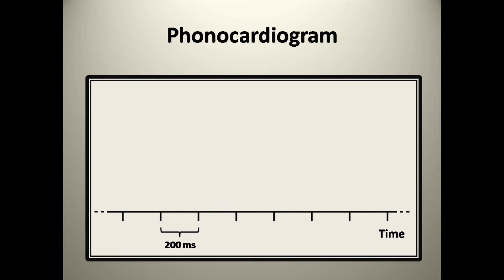When I listen to this murmur, the murmur itself is actually the first thing that stands out to me instead of the heart sounds, so let's start with that. Listen to see whether the murmur is present for longer than 50% of the cardiac cycle, in which case it's likely to be diastolic, or if it lasts shorter than 50% of the cardiac cycle, in which case it's probably systolic. One way to do this is to place your hand down on the desk when the murmur is present and then lift it off when the murmur is gone.